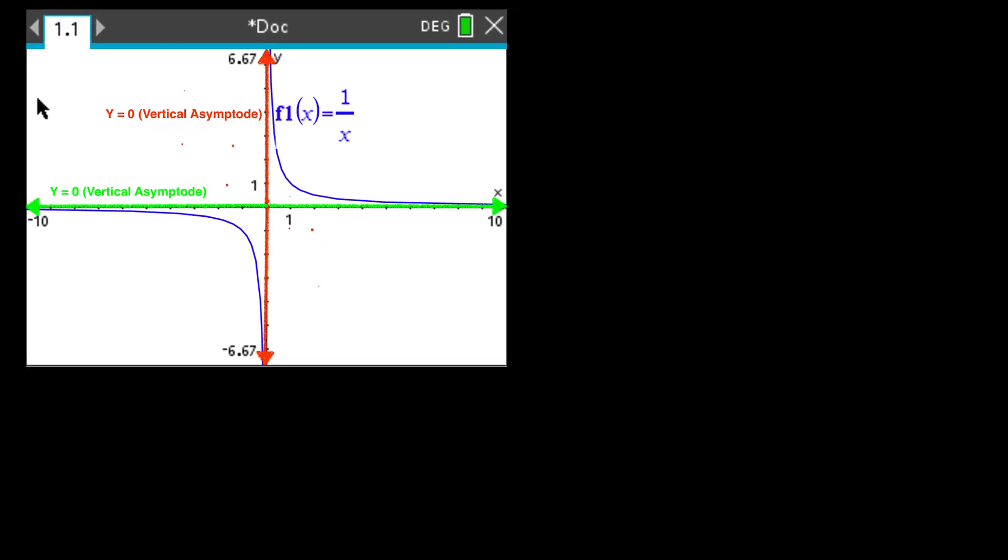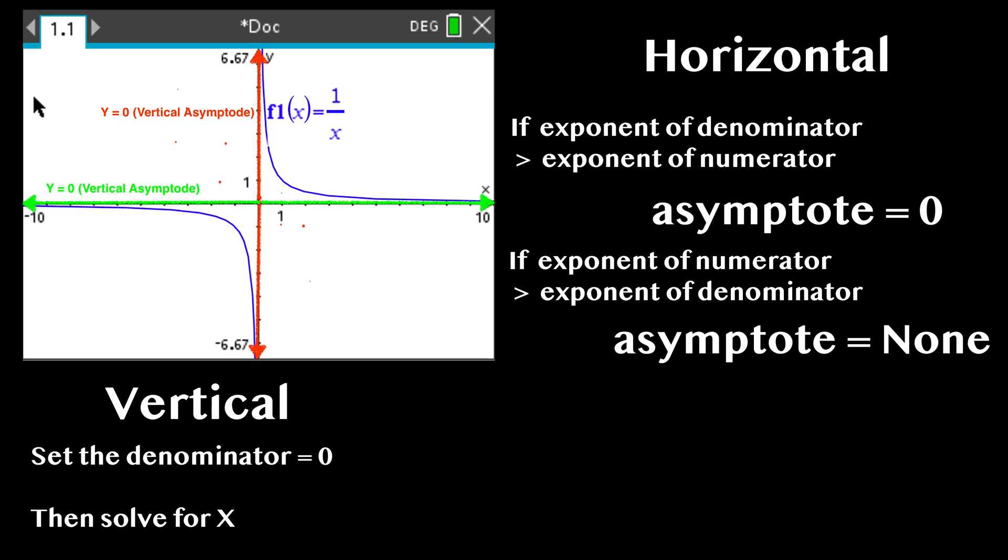To find the horizontal asymptote, if the degree of the largest exponent of the denominator is bigger than the degree of the numerator, the horizontal asymptote is the x-axis or y equals 0. If the degree of the numerator is bigger than the denominator, there is no horizontal asymptote. So in this case, it's y equals 0.